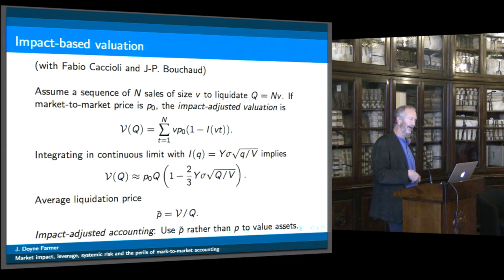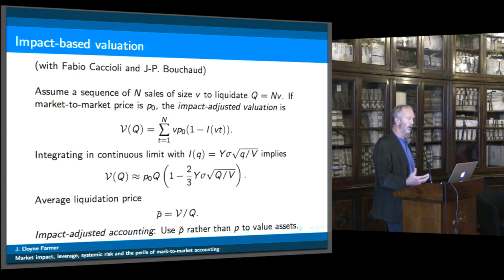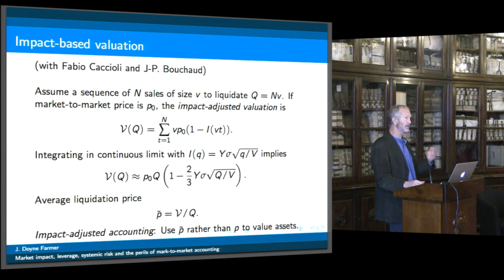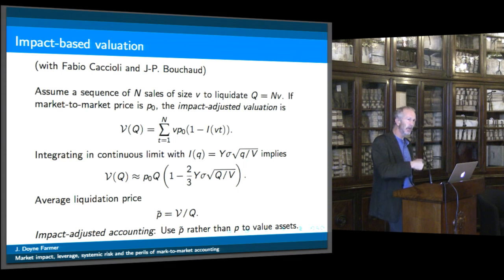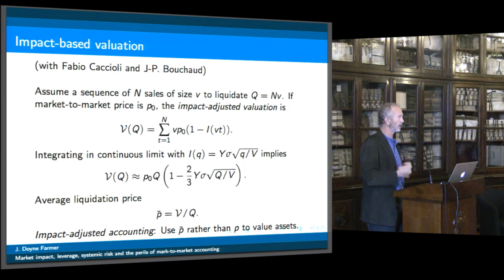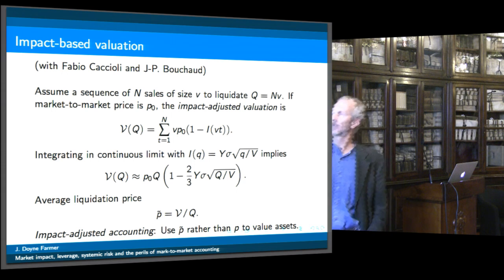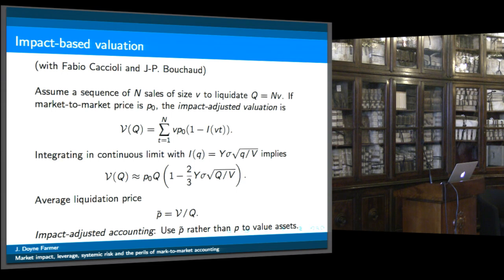If you want to think about what is the impact-based valuation for your portfolio, you ought to imagine selling off the whole portfolio and looking at the value when you sell the whole thing off — so you estimate it using the market impact rule. You imagine making a sequence of trades to liquidate the securities in your portfolio. Starting with just a portfolio with one security, you make a sequence of trades as I've shown here, and the impact is accumulating with each trade.